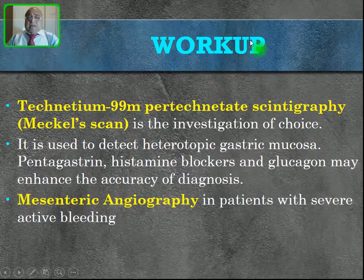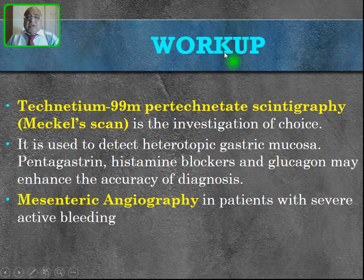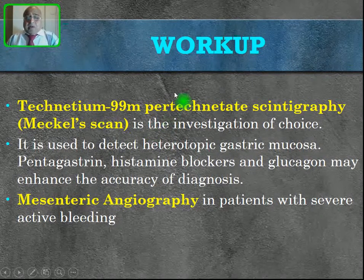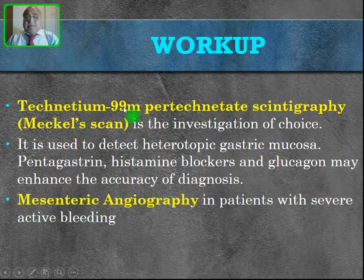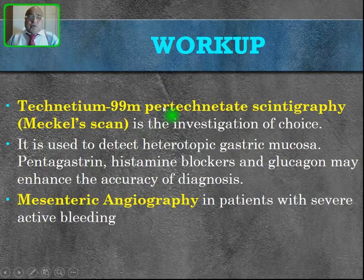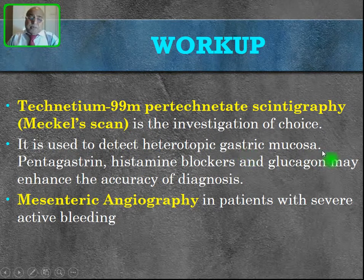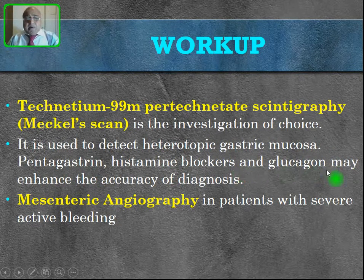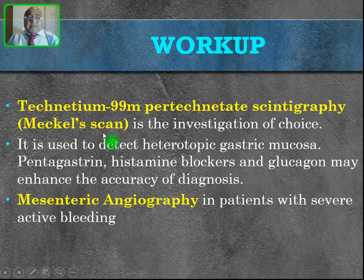For investigations, the gold standard is technetium-99 pertechnetate scintigraphy, also known as the Meckel scan. This is a radioisotope scan used to detect heterotopic gastric mucosa. Pentagastrin, histamine blockers, and glucagon may enhance the accuracy of this Meckel scan.